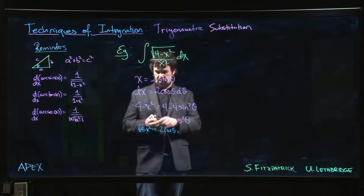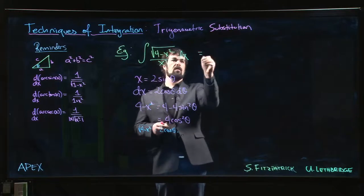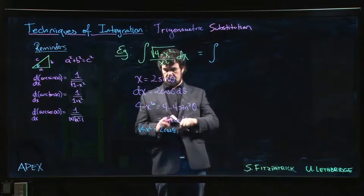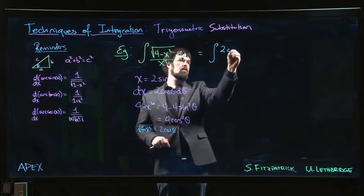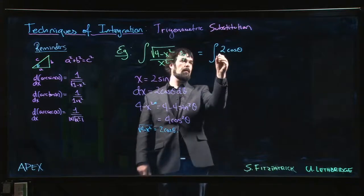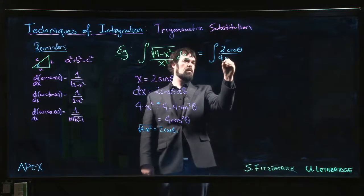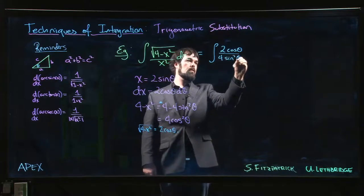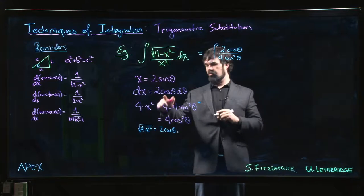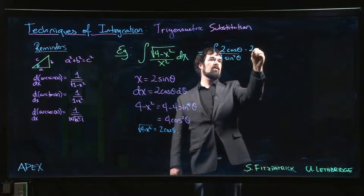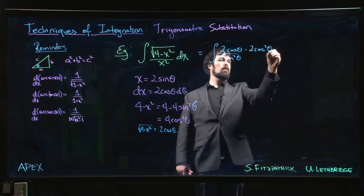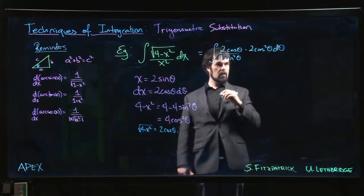So we have everything we need to make our replacements. And so we dive right in. That numerator becomes 2 cos theta. That denominator is 4 sine squared theta. And x squared dx, we have 2 cos squared theta d theta.